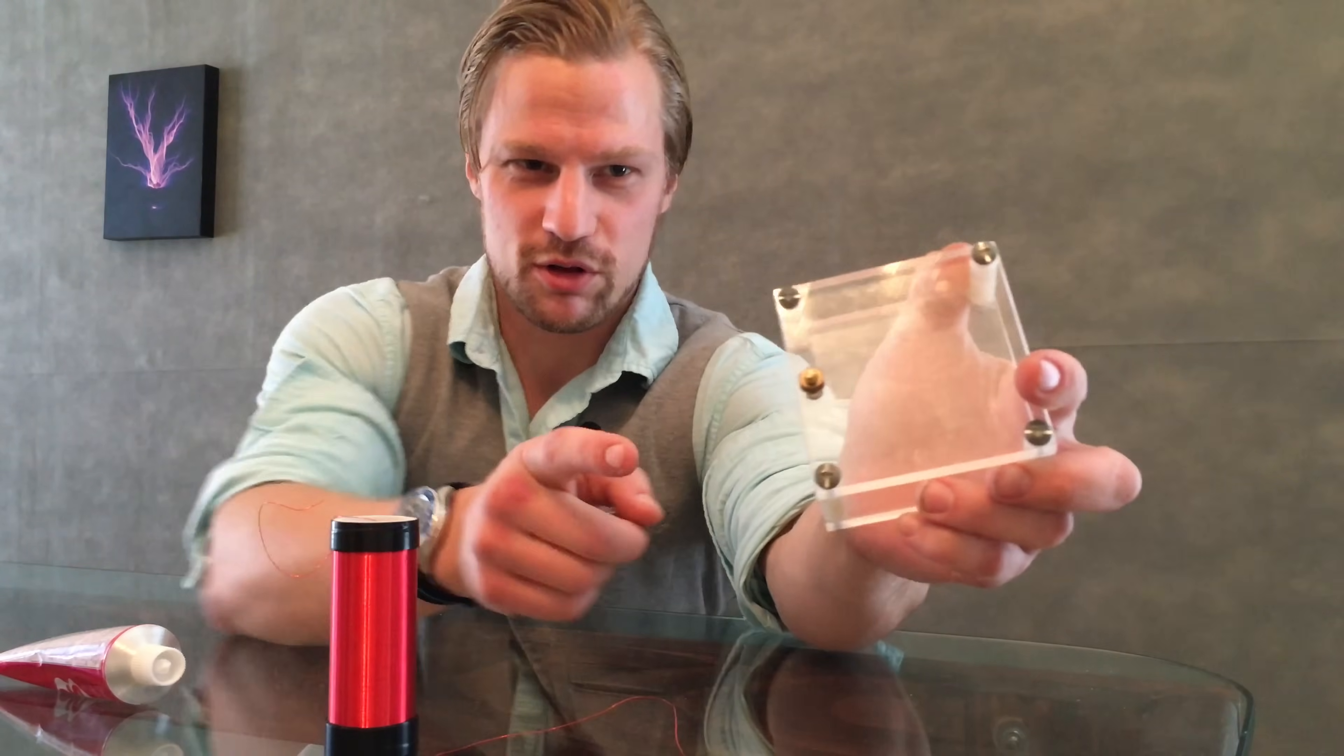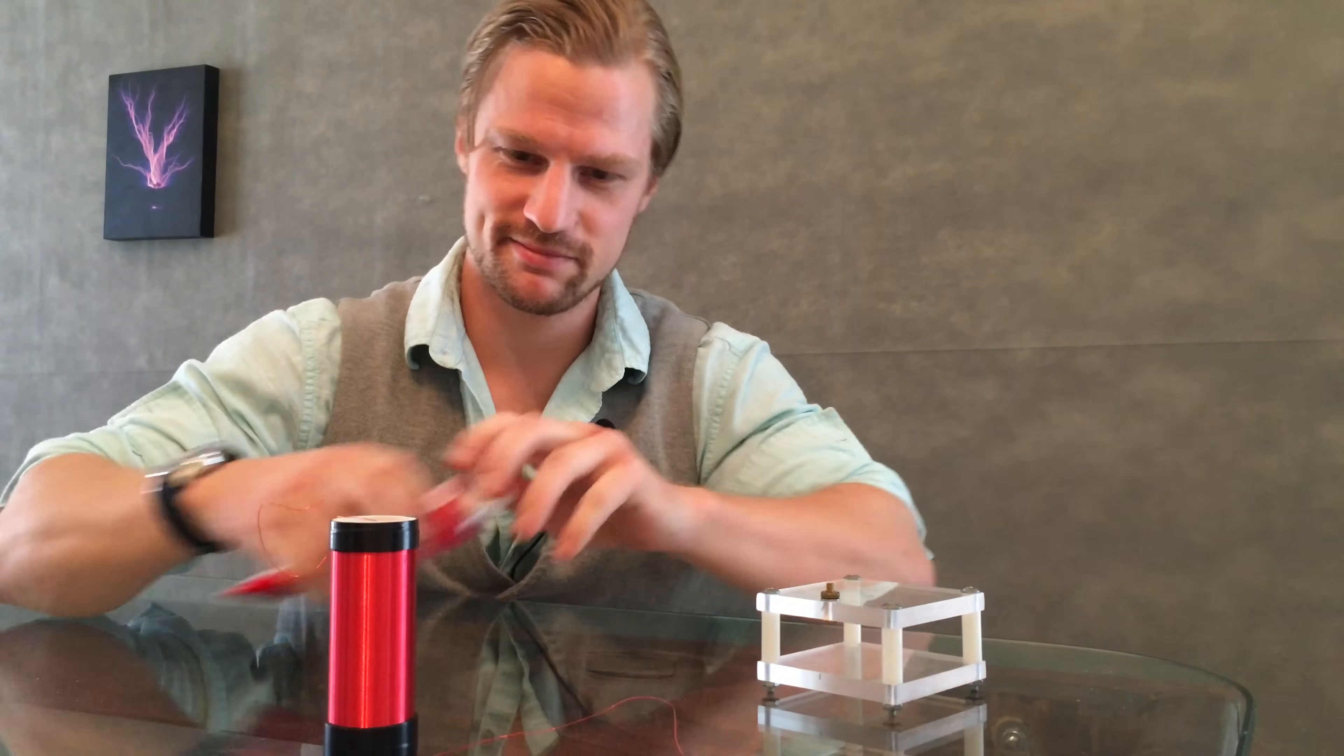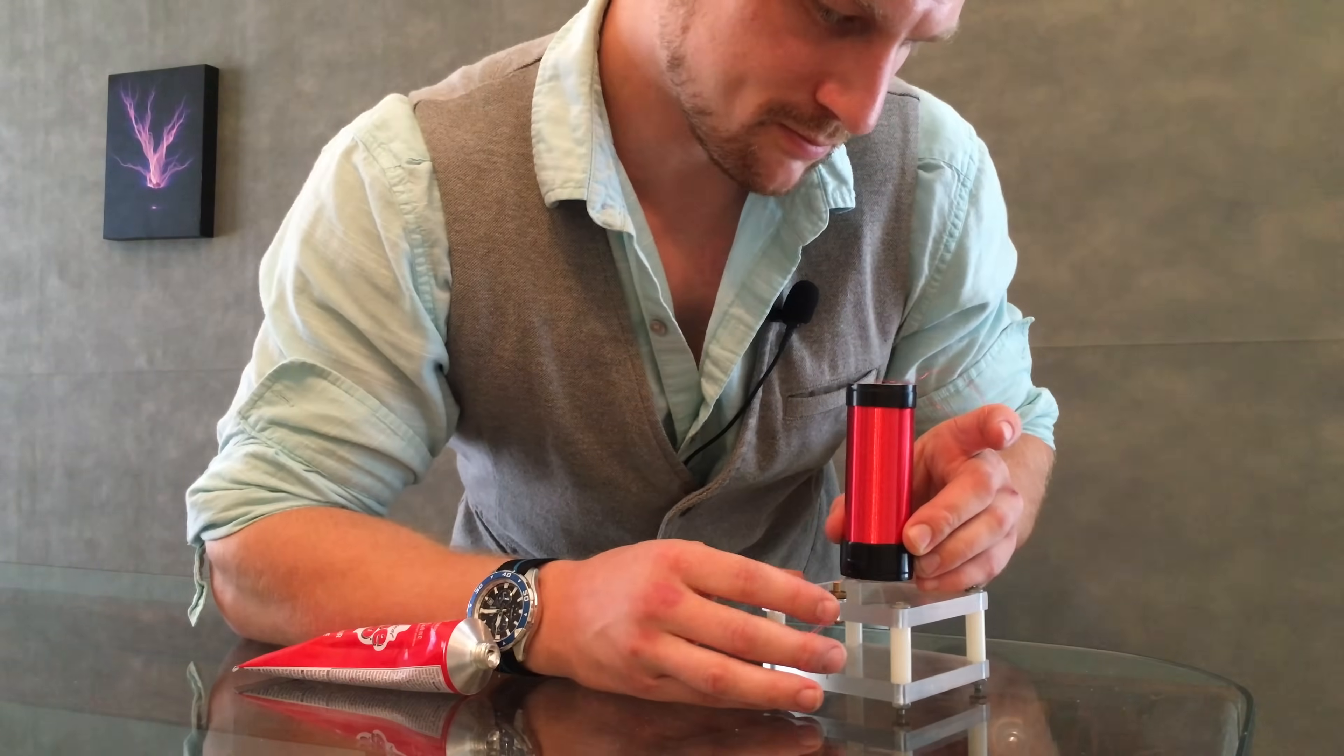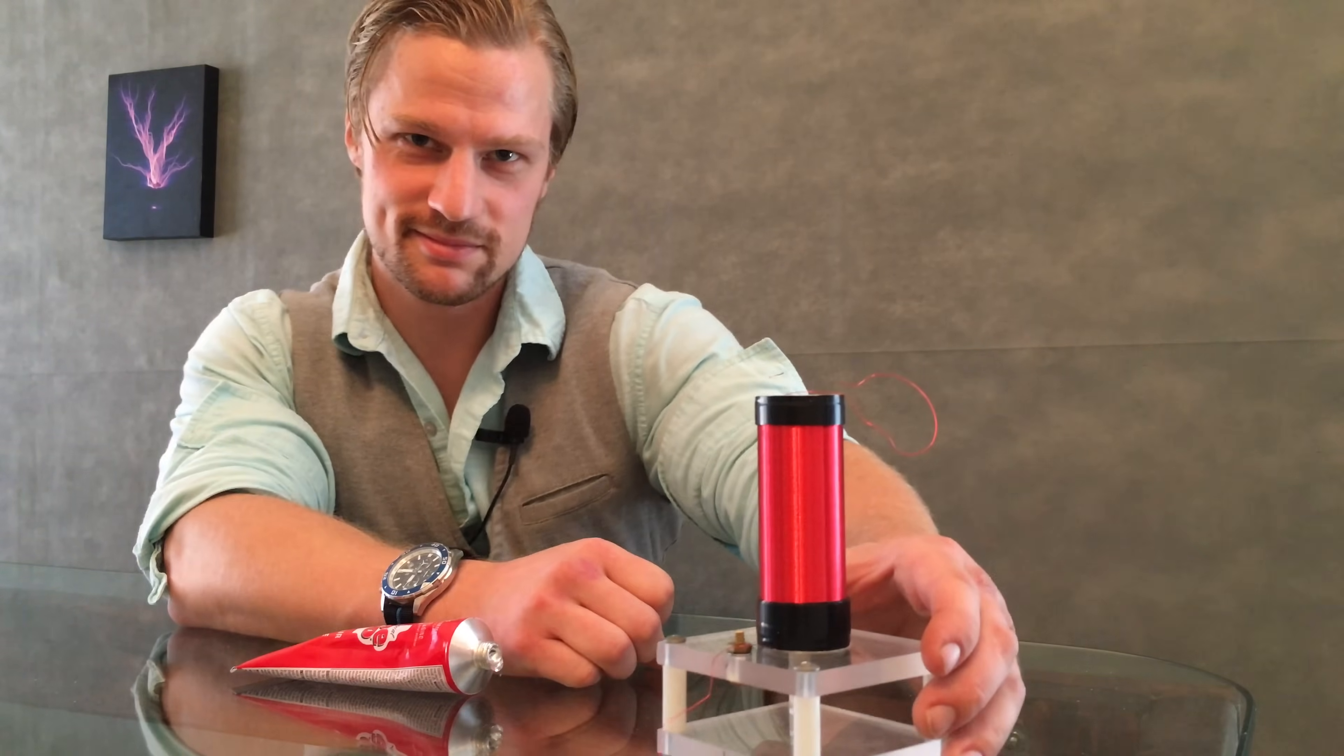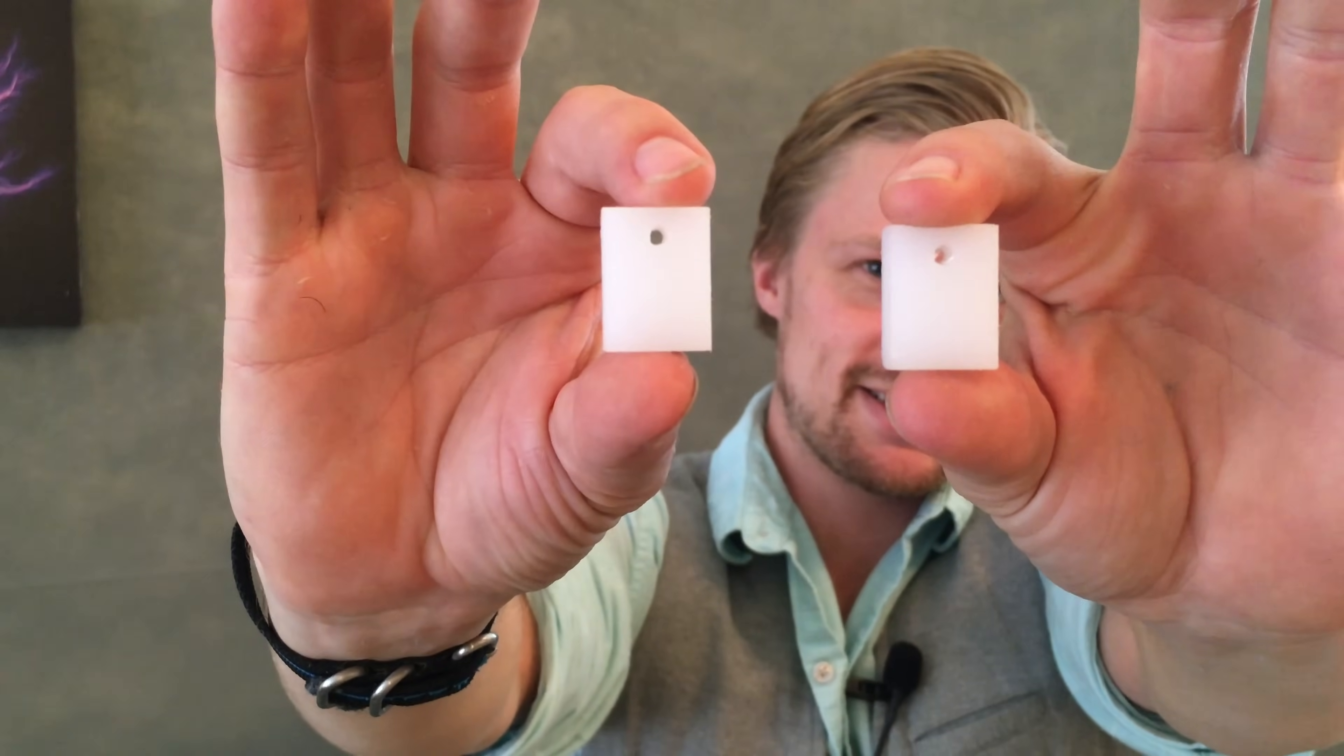Now take the base and drill a hole a quarter of an inch from the edge and insert a bolt. Now attach the secondary. Let's now work on the spark gap. There's probably over a million ways to make a spark gap so I'm just gonna show you my way.